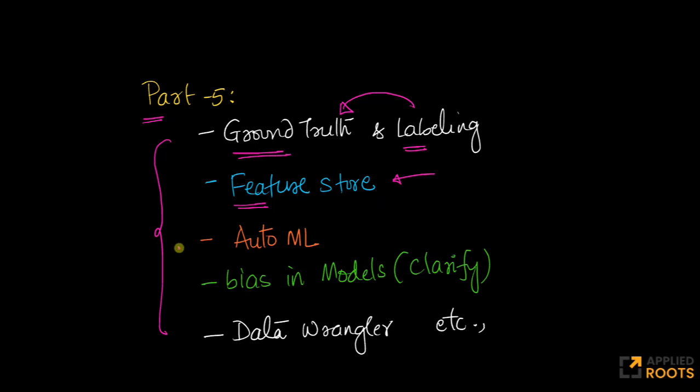We will discuss how much of auto ML is facilitated through SageMaker. Mostly it's about architecture search and hyperparameter tuning. Similarly, there is a component called SageMaker Clarify which helps ensure there are no specific biases in your model, no bias for one gender, race, or geographic location of people or customers.